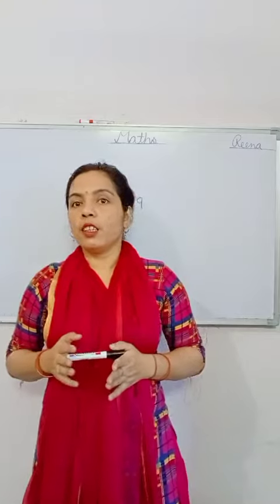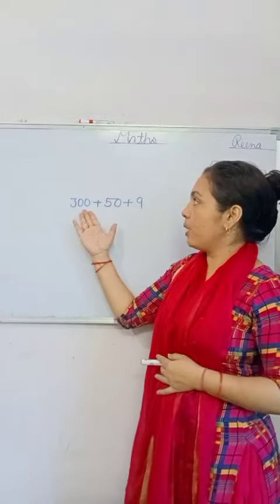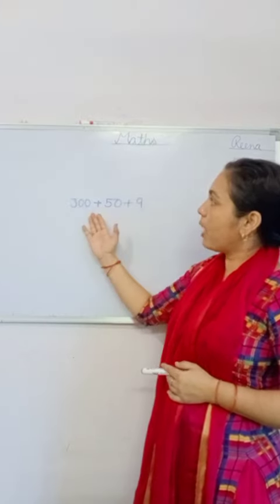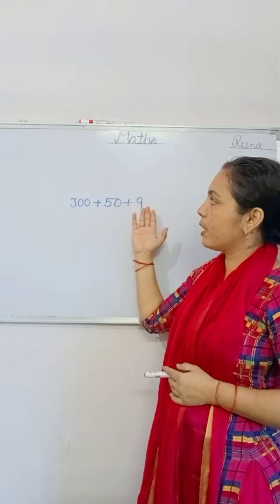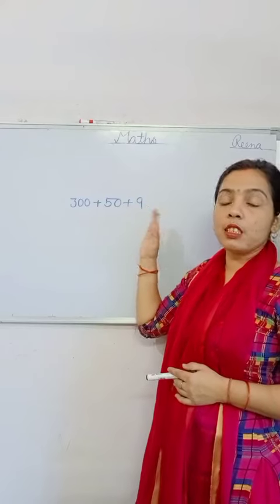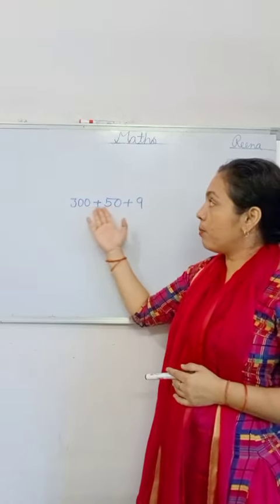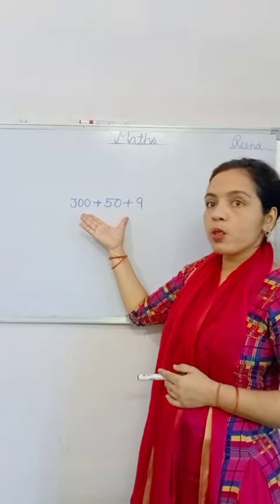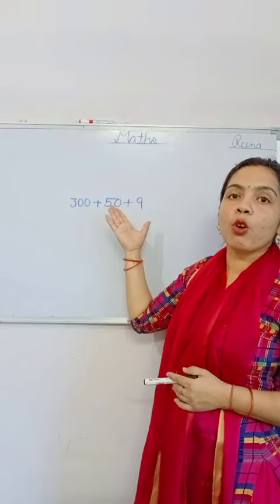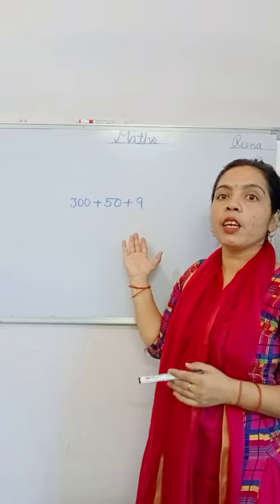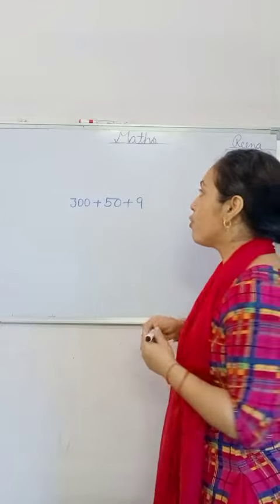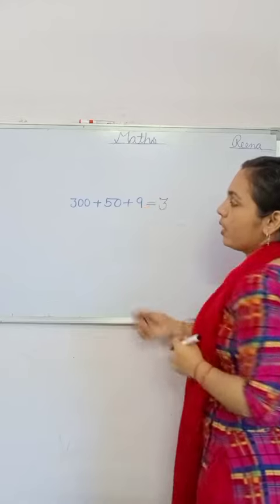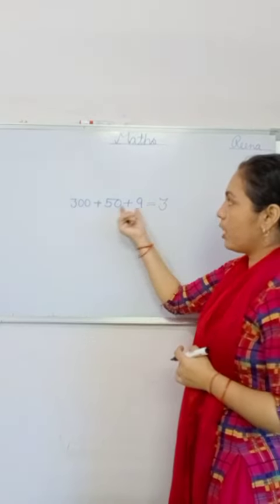Today you have been given a number in addition form, in horizontal form. Now, tell me which type of number is this? The number is in addition form and it is also called the expanded form of a number. Expanded form. For example, the number 359.